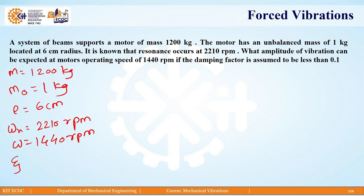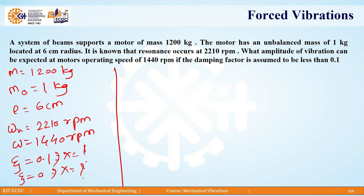We are assuming that the damping factor zeta is equal to 0.1, and we also need the amplitude at zeta equal to 0. First, omega by omega_n is 1440 divided by 2210, which gives 0.652.